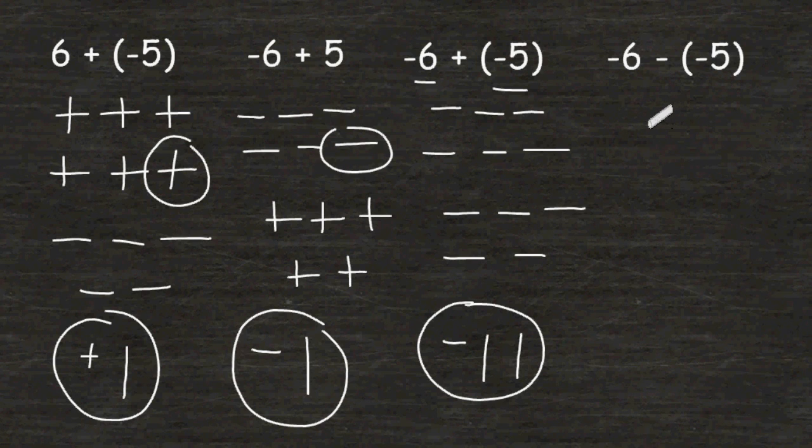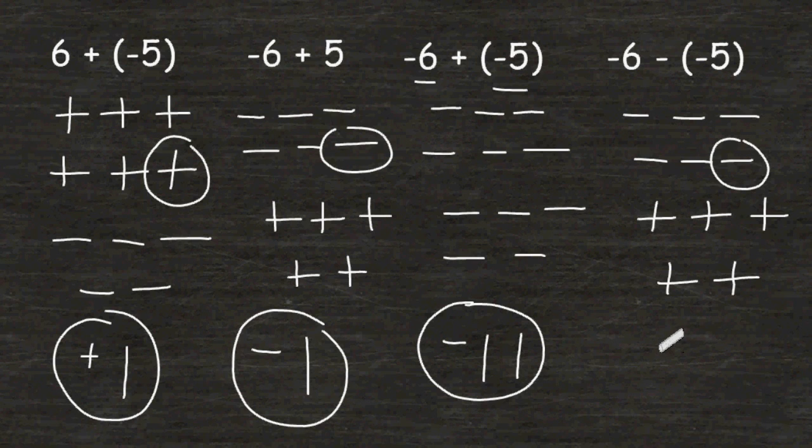And for the last example, we start off with 6 negative signs. And then we have to do the opposite of 5 negative signs, which is to draw 5 positive signs. And we have one more negative than we have positives, so the answer would be equal to negative 1.